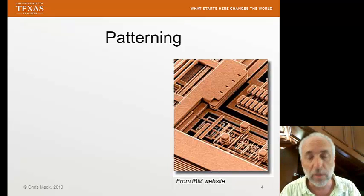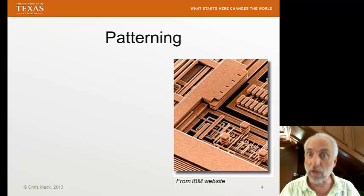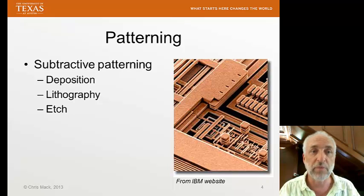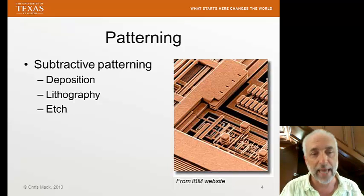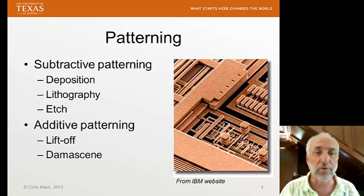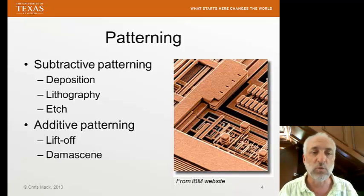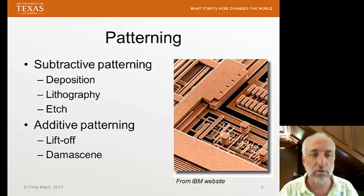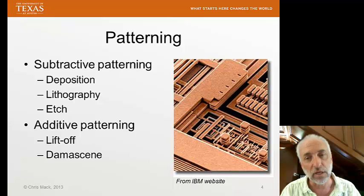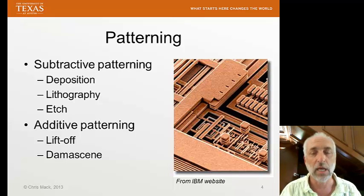There are two basic approaches for patterning. The first is called subtractive patterning: deposition plus lithography plus etch. There's also an additive patterning process — lift-off is one example, which we'll mention but not cover in depth this semester. Damascene is very important — it's how all those copper wires you see in the picture are printed. It's an additive patterning process, and we'll talk more about it as the semester goes on.